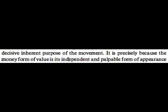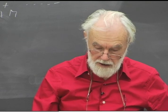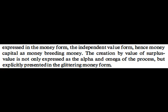From the standpoint of money, on page 137: it is precisely because the money form of value is its independent and palpable form of appearance — and I always watch Marx's stuff about appearance — that the circulation form M to M' expresses money-making, the driving motive of capitalist production, most palpably. The production process appears simply as an unavoidable middle-term, a necessary evil for the purpose of money-making. Money always appears as having an independent value form — money breeding money. The creation by value of surplus value is not only expressed as the alpha and omega of this process, but explicitly presented in the glittering money form.